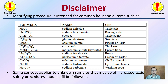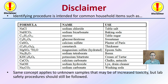Here we have a disclaimer: in this example we'll be identifying some common household items — everything from table salt, baking soda, and table sugar — but realize that these same concepts can be applied to items that have increased toxicity levels.